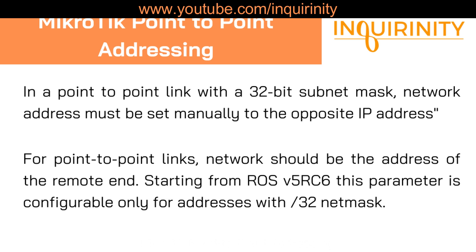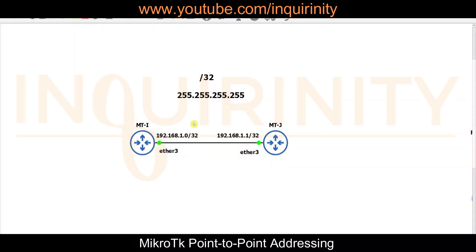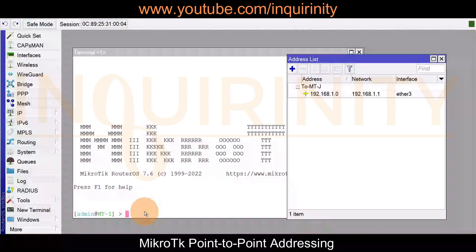Now for MikroTik point-to-point addressing with a slash 32 subnet mask: the network address must be set manually to the opposite IP address. For point-to-point links, the network field should be the address of the remote end. Starting from RouterOS version 5rc6, this parameter is configurable only for addresses with a /32 netmask. In our topology we have MikroTik I and MikroTik J, now using slash 32 — the full 255.255.255.255.